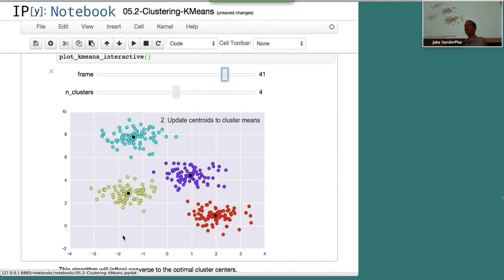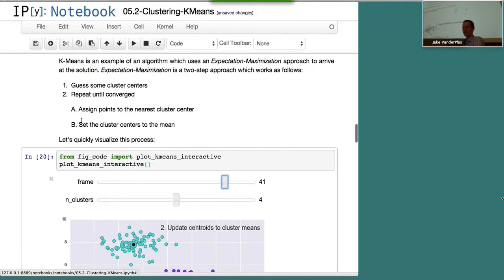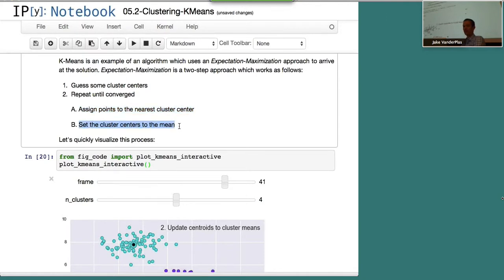And so this is known as expectation maximization because you're assigning the points. You're saying, what do I expect the points to be? And then based on that expectation, what's the maximum likelihood for our cluster centers? And then you repeat over and over again. And this expectation maximization algorithm is something that pops up all over the machine learning literature.